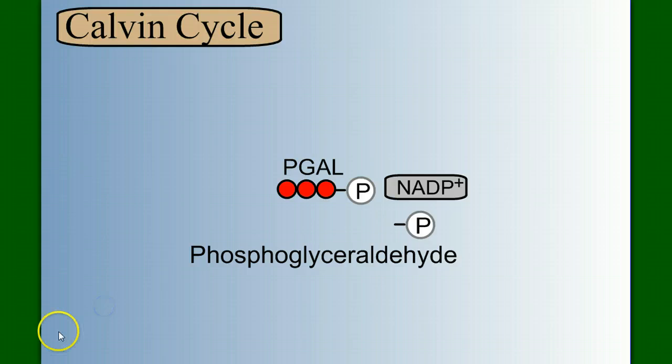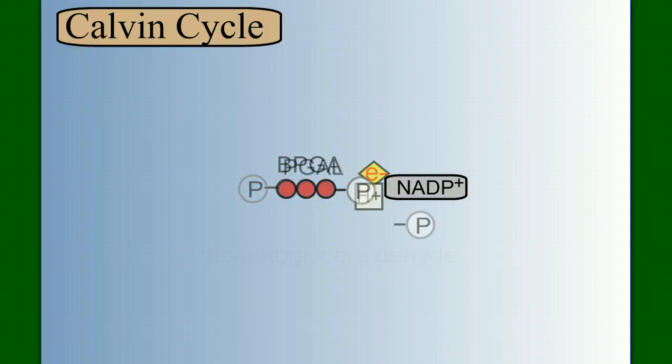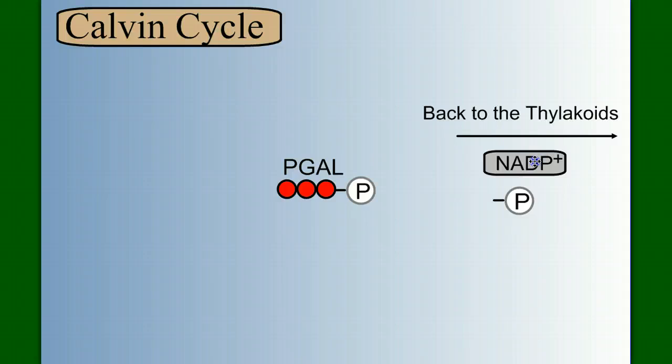So let's watch that again. BPGA combines with NADPH, which drops off an energy electron and a hydrogen, and converting BPGA into PGAL, or phosphoglyceraldehyde. The NADP plus and this phosphate can go back to the thylakoid for the light reactions.